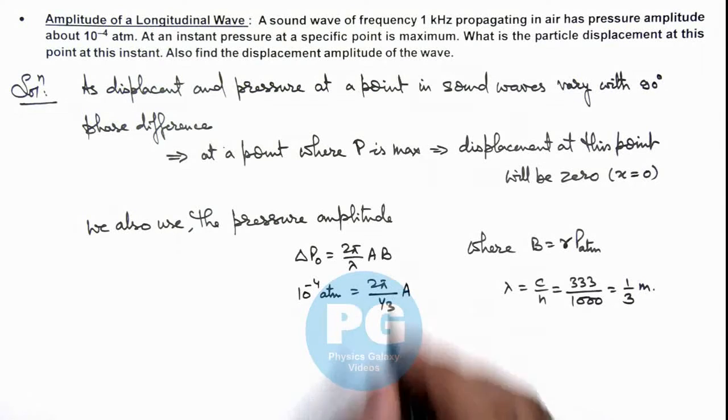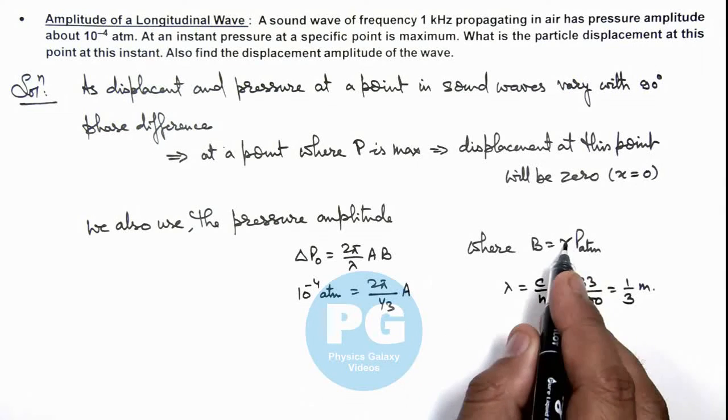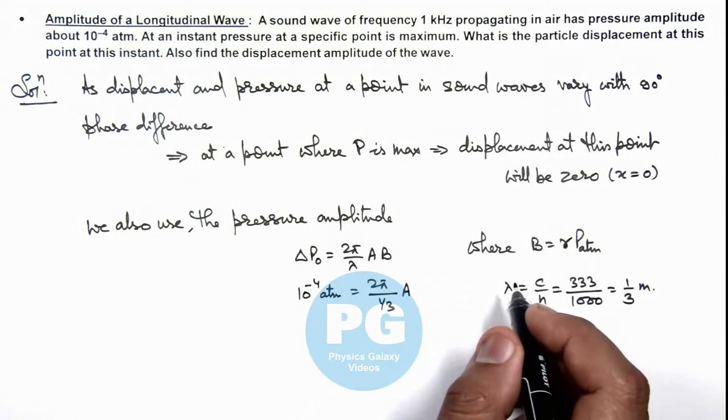Times A multiplied by B, and bulk modulus we know it is γ times atmospheric pressure, and air can be considered as a diatomic gas.